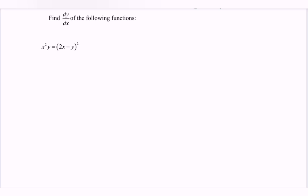So here we have x² multiplied with y equals bracket 2x minus y squared. So let's begin on the left hand side, we have the product rule. So let it as u and then v. Let's begin.